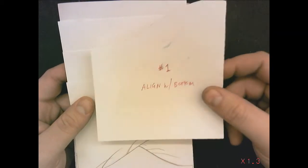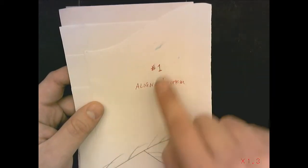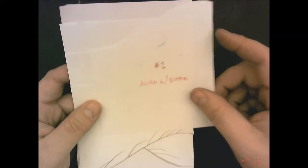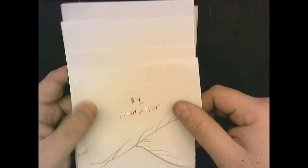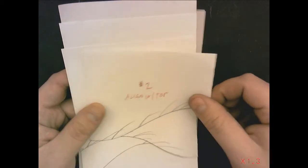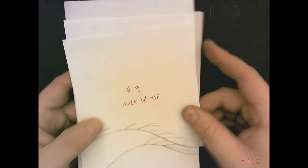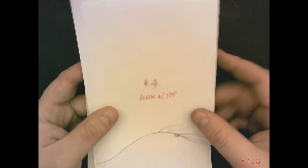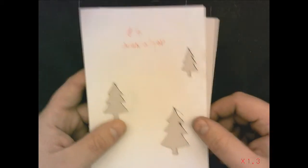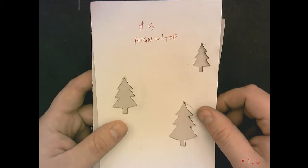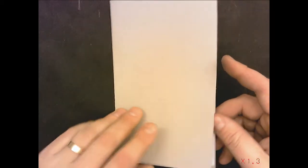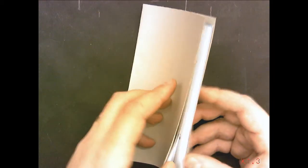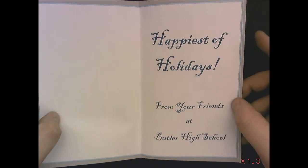Containing stencil one, notice it says align with the bottom. And we have stencil number two where you're going to align it with the top. Stencil number three, stencil number four, there's stencil number five. You should have a piece of newsprint paper which is a cover sheet and you have your holiday card. Inside of it is a nice little message from us wishing you the happiest of holidays.